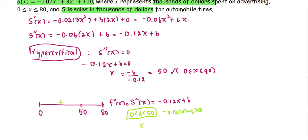And then between 50 and 80, let's say 60: -0.12 times 60 plus 6. The result is going to be negative. So the sign changes from positive to negative, or from concave up to concave down. Therefore, the point of diminishing returns is at x = 50.